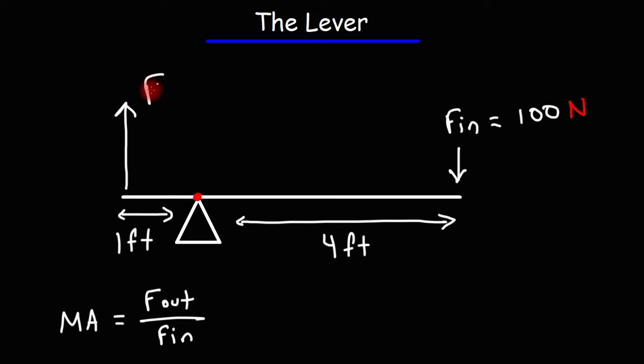On the left side, the output force is going to be 4 times greater, because the distance between where the output force is applied and the lever is 4 times less. 4 times 100 is 400 newtons. Using this formula, if we take the ratio of the output force divided by the input force, this gives us a mechanical advantage of 4.